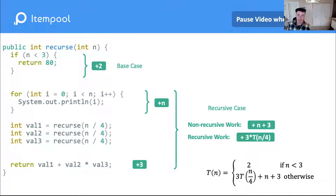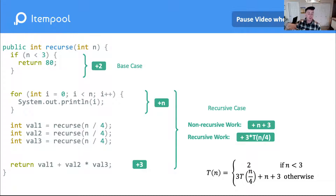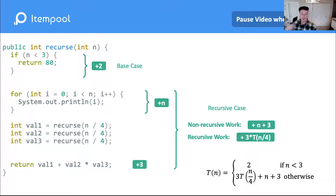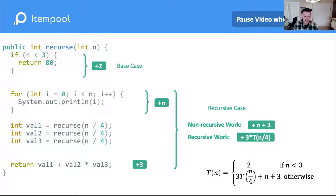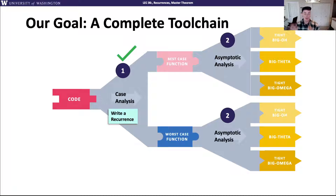An important point: the numbers in the recurrence don't necessarily relate to constants that exist in the code. Like, just because there's an 80 in our base case doesn't mean there's going to be an 80 in our runtime function — T models runtime, not code values. The numbers from the code that do matter are things like when we recurse on n/4, making the next input size one-fourth of what it was before. We don't yet know how to turn this recurrence into an asymptotic bound — that's our next video, where we take the recurrence and perform asymptotic analysis.